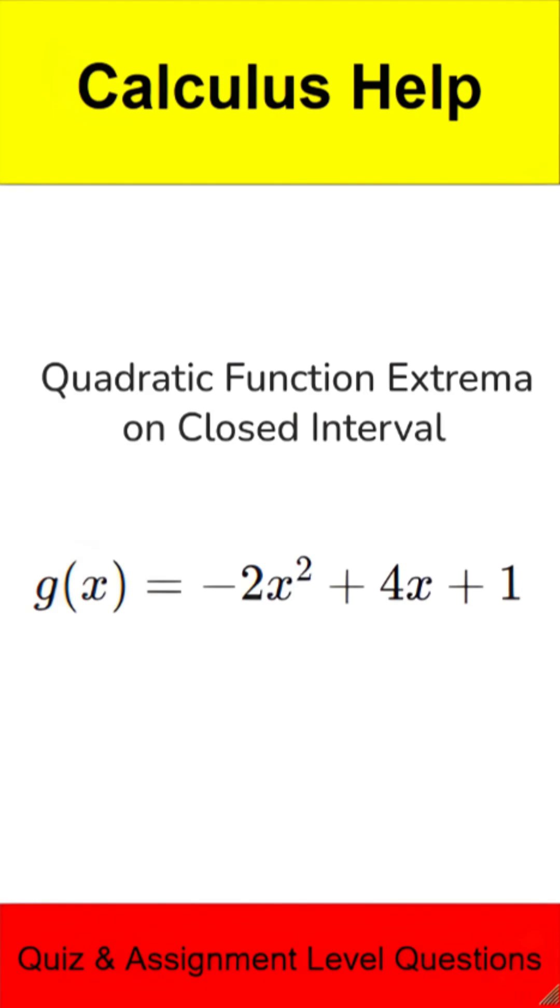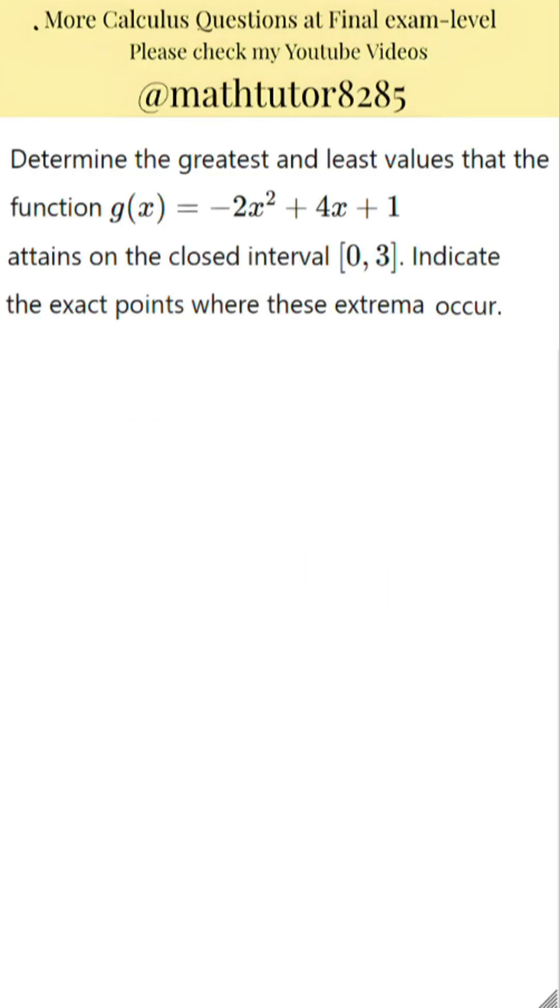This question is to find the highest and lowest values that the function g of x equals negative 2x squared plus 4x plus 1 reaches over the closed interval from 0 to 3. State exactly at which values of x these extreme values occur.